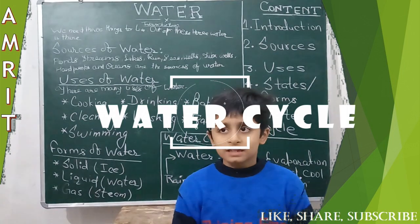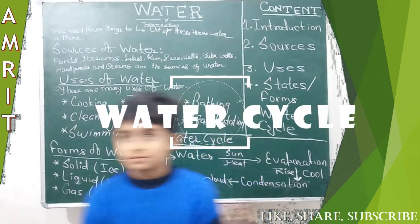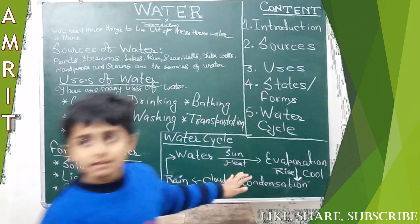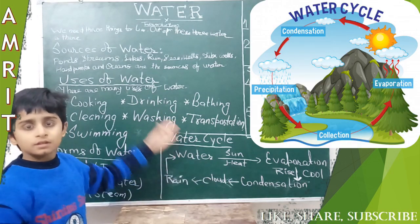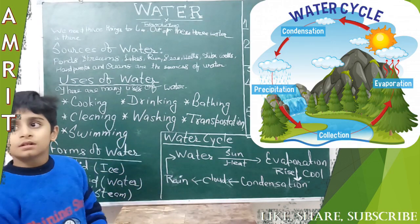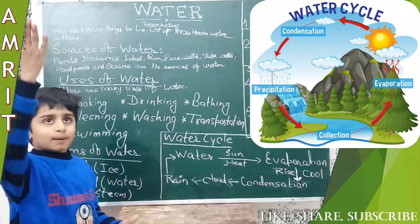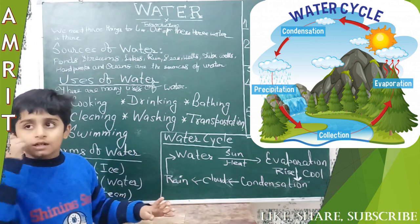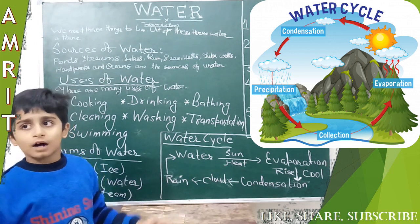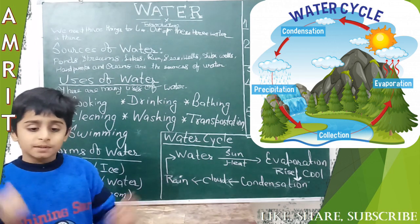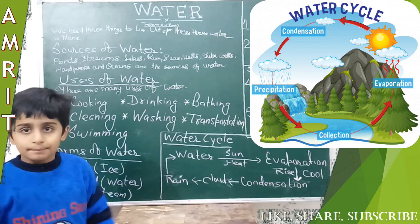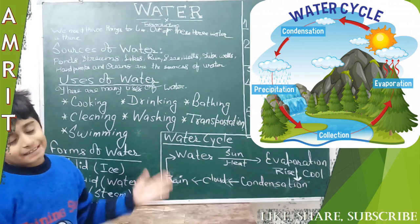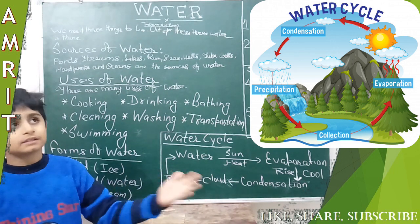Now we go to the water cycle. The water cycle starts from water — the heat of the sun evaporates it and it goes into the air. When it rises and cools, it condenses and forms into clouds. Then the clouds bring rain to the earth. Then the water gets evaporated again, and this cycle goes on.